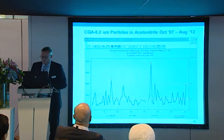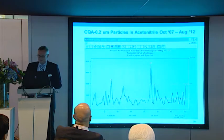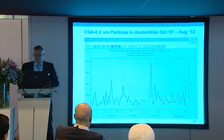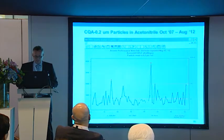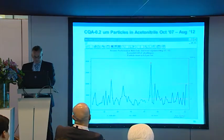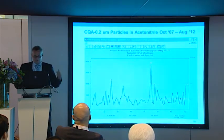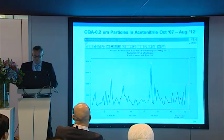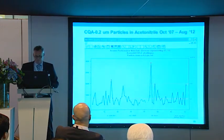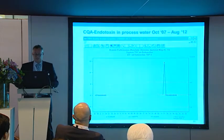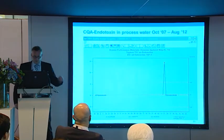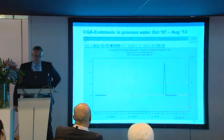This is an example of a lot-to-lot consistency test of acetonitrile, in which you can see that it varies between several levels. We have control on these levels — any points above the critical level do not pass through; they will be rejected. The same applies for endotoxins, for instance in our process water, which has been monitored from October 2007 until August 2012.